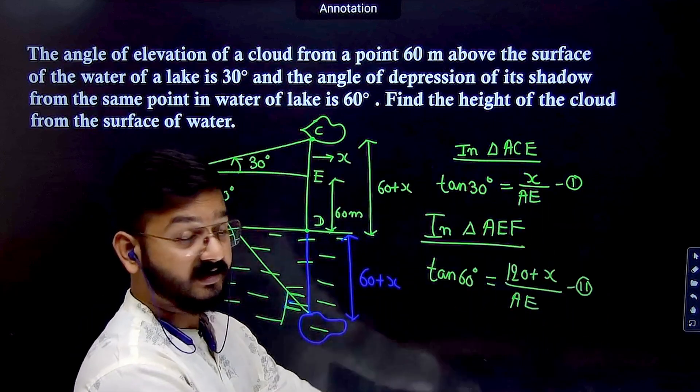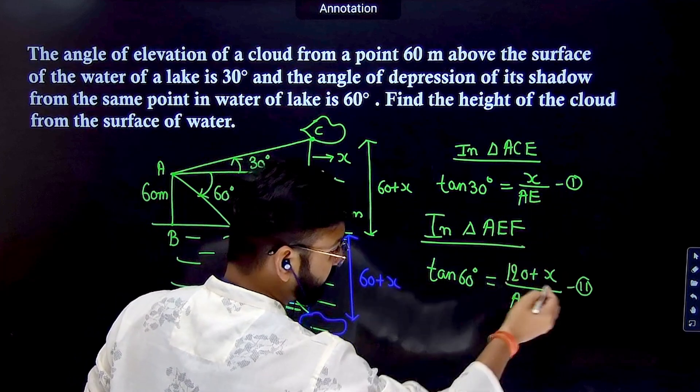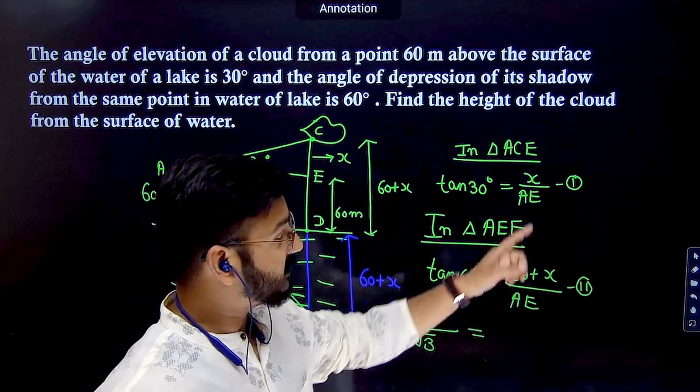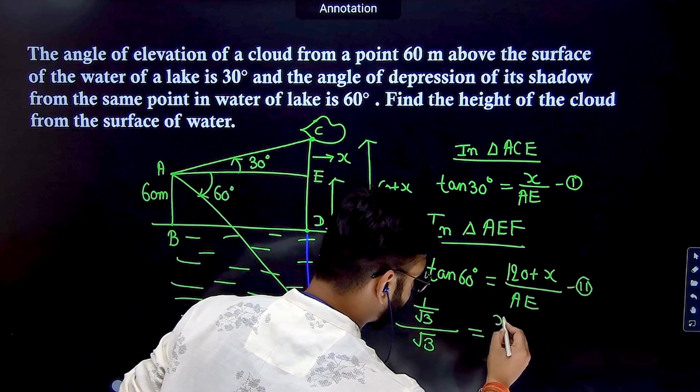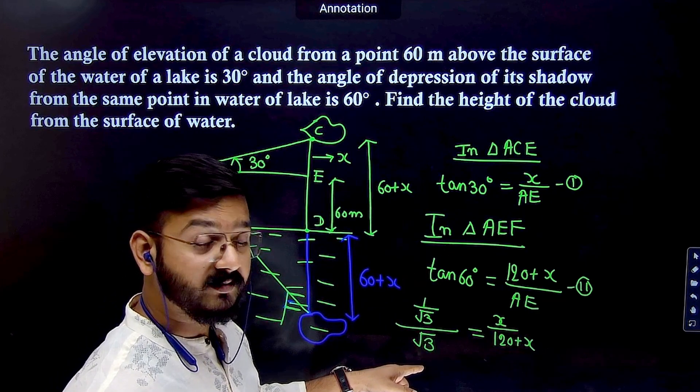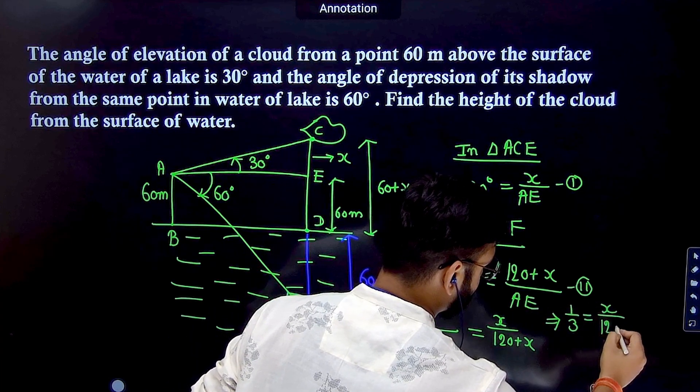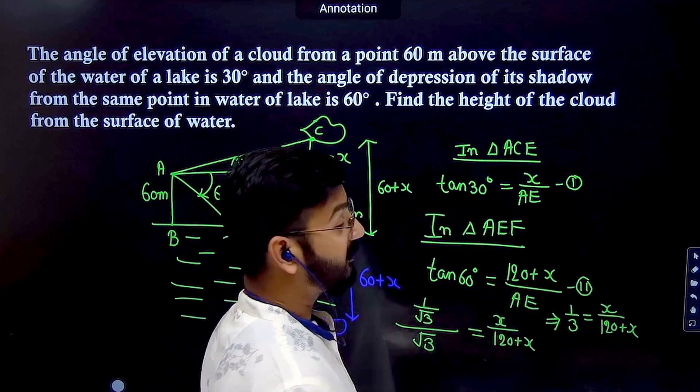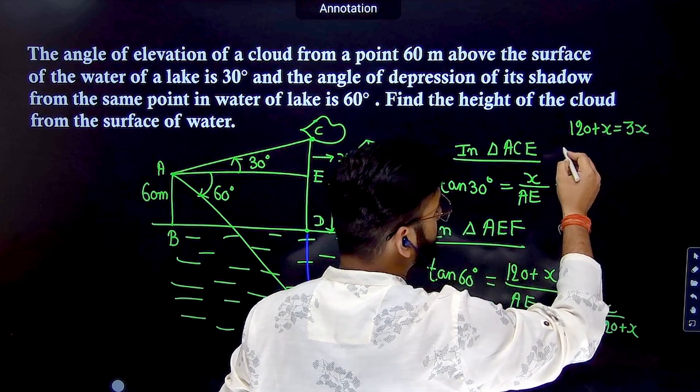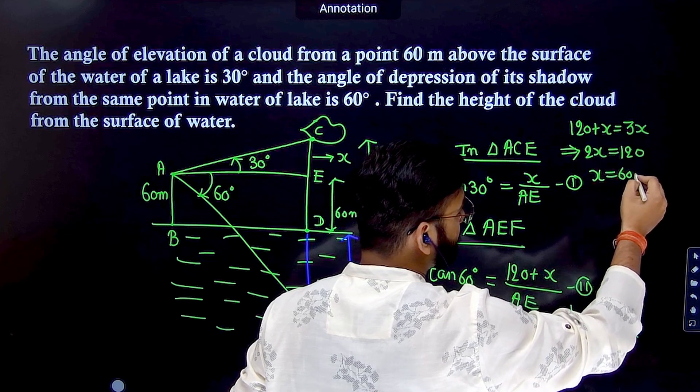Dividing equation 1 by equation 2: (1/√3) ÷ (√3) = X/(120 + X). This simplifies to 1/3 = X/(120 + X). Cross multiplying: 120 + X = 3X, so 2X = 120, and X = 60 meters.